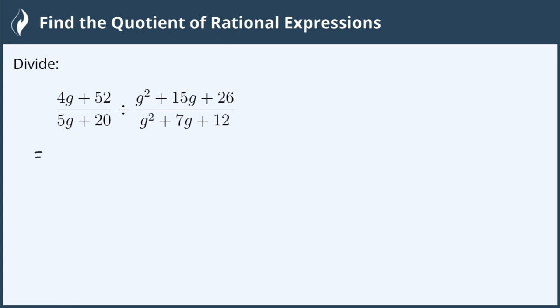We're going to start that by just copying down the first fraction directly. So 4g plus 52 is over 5g plus 20.